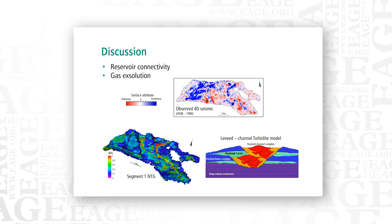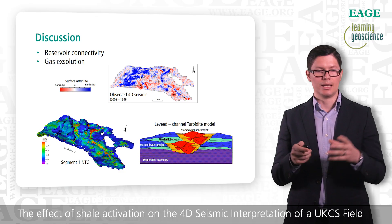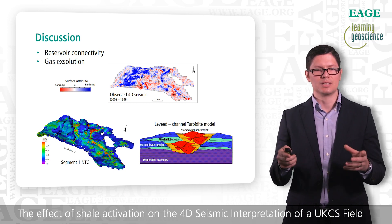For a better understanding of the distribution of the softening signal, we need to look back at the geology. Looking at the net-to-gross distribution in the map of the reservoir, the hardening is related to the main channel structures, while the softening is associated with the overbank facies. In the initial models where the shales were not active, those facies were isolated through the use of transmissivity multipliers. With the shale activated, the permeability of the shale — even when very low, in the range of nanodarcies — allows connectivity between the main channel facies and the overbank facies. That connectivity allows pressure drop, and that pressure drop causes gas to come out of solution, which is responsible for the softening signal in the field.